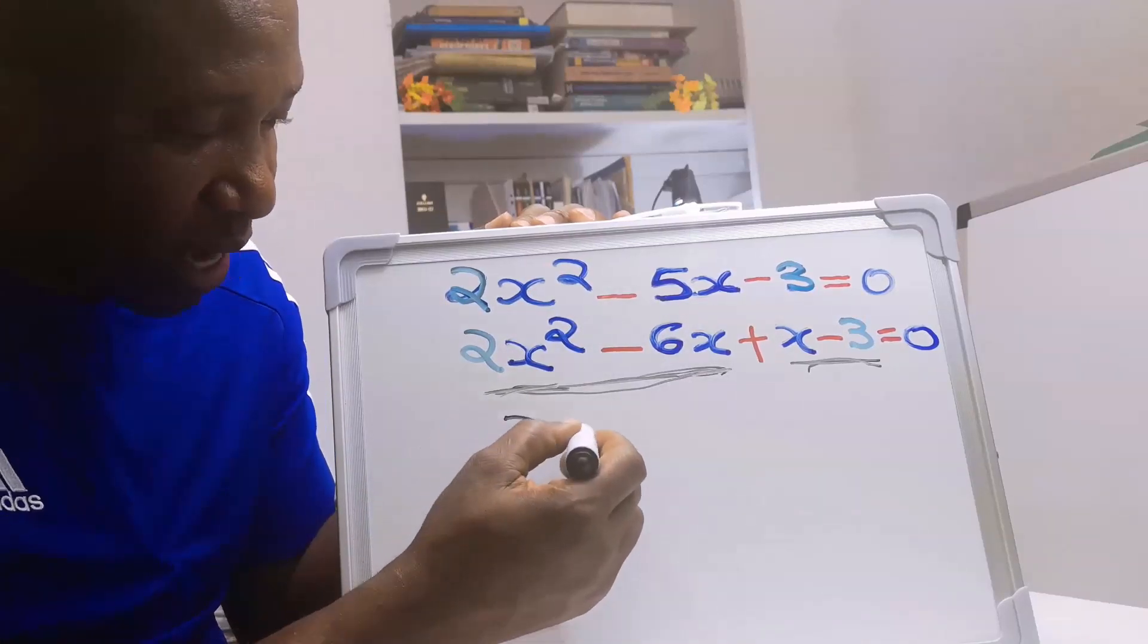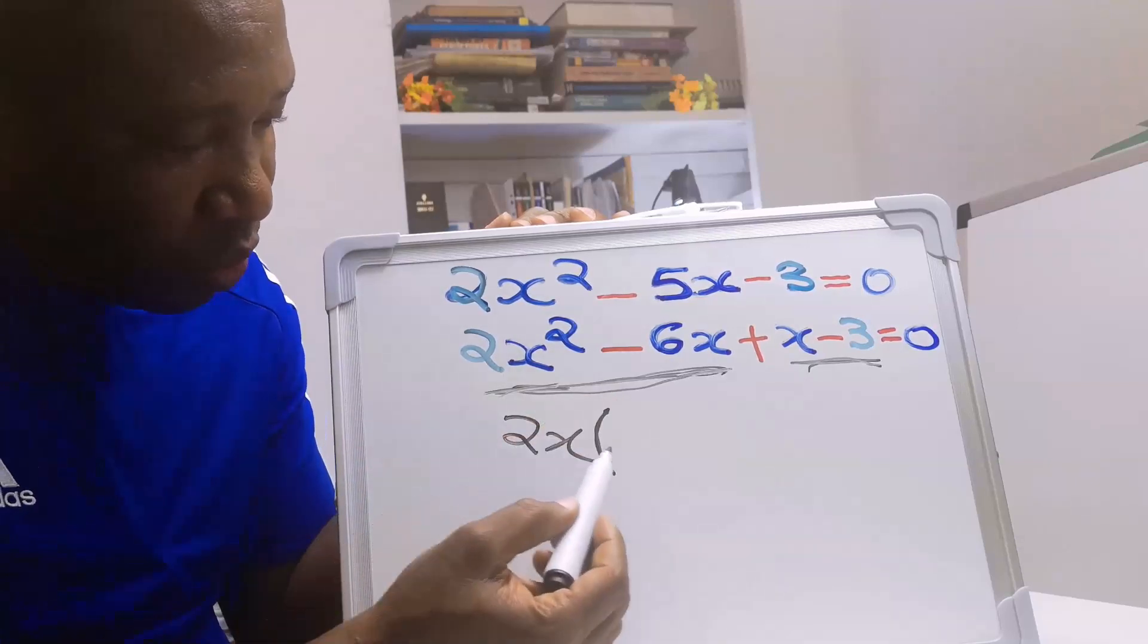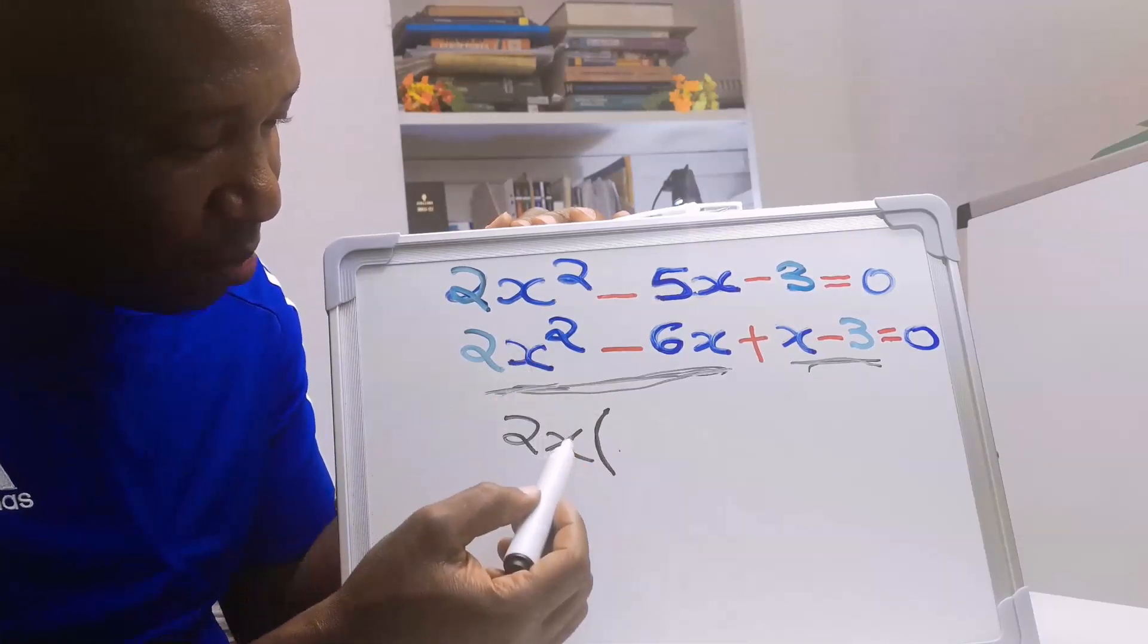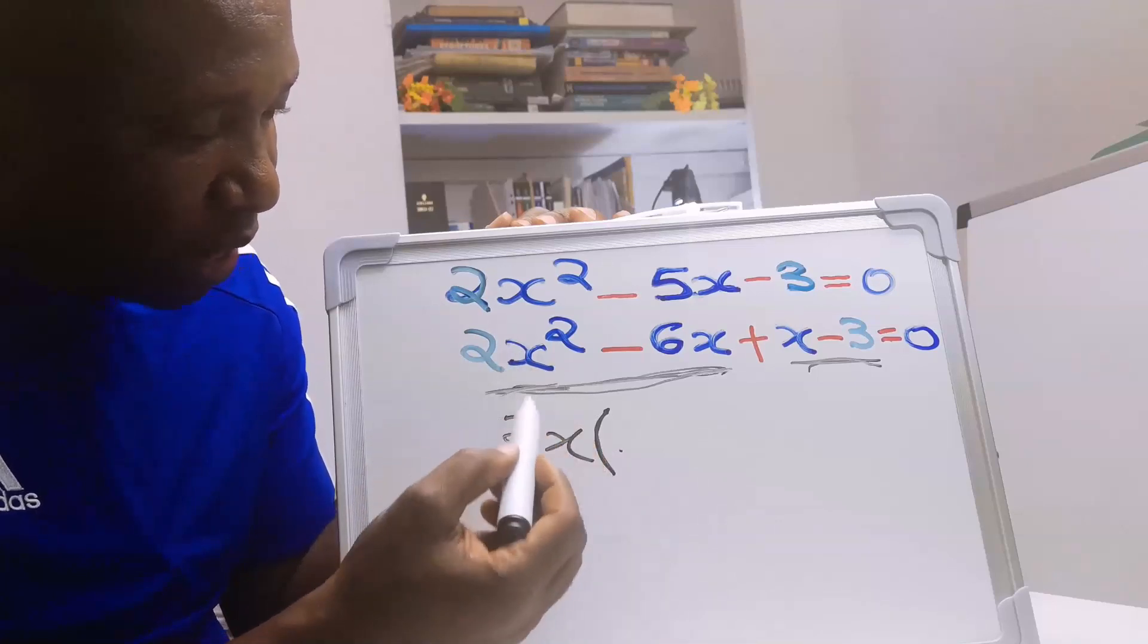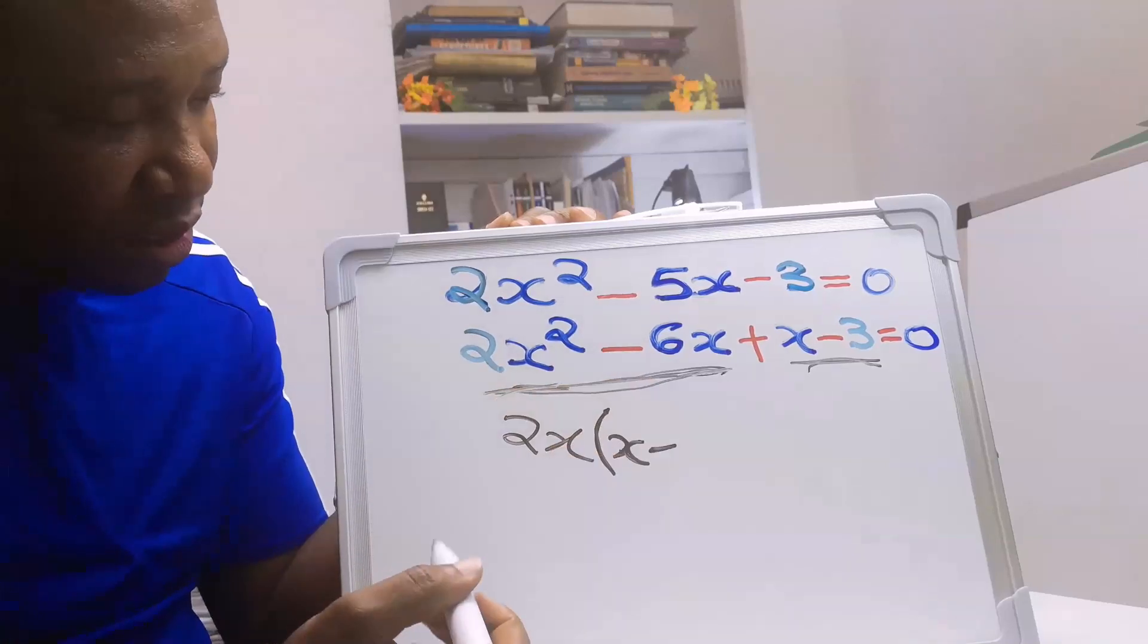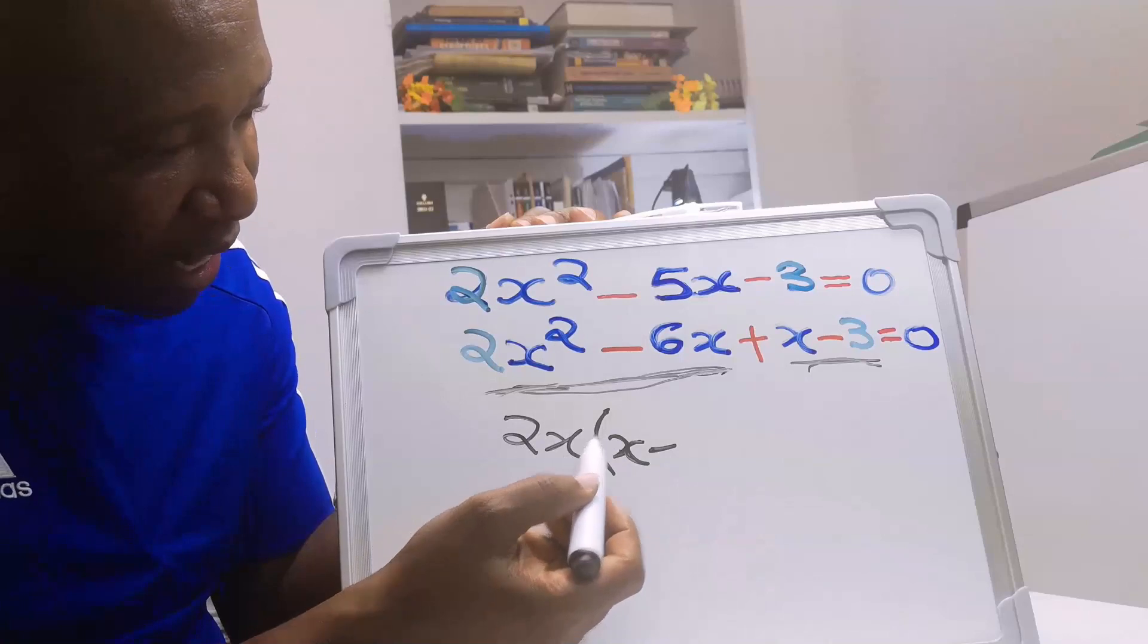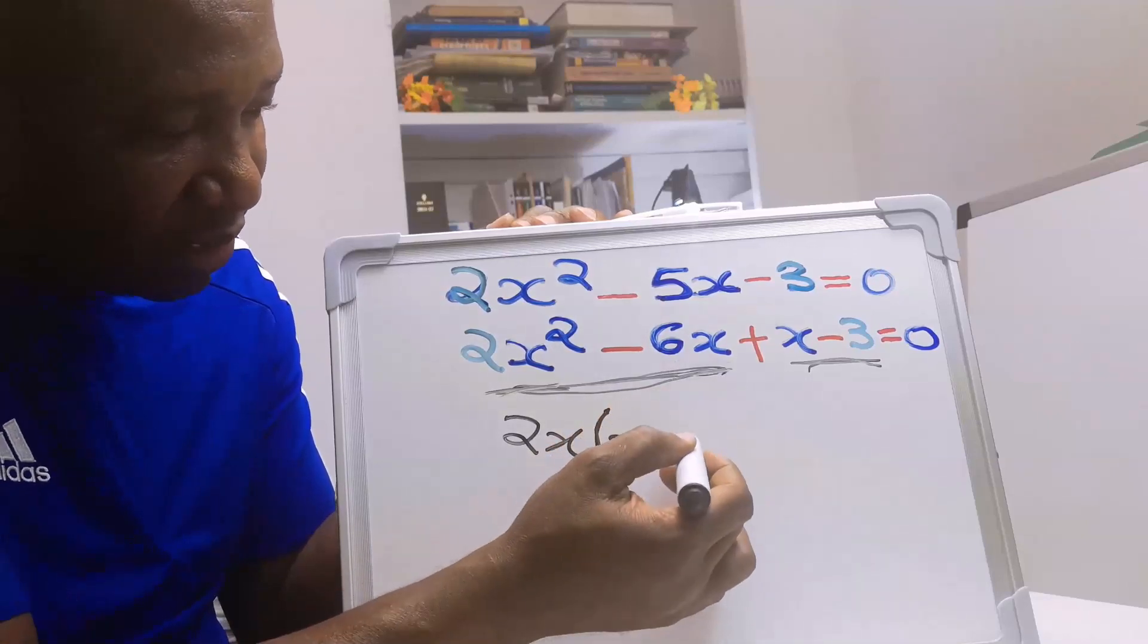Next, we are going to open a bracket. What will I put here? By the time I multiply the value, I will get 2x squared. It is x. This is a minus. Next, what will I put here? By the time I multiply 2x, I will get 6x. It is 3.